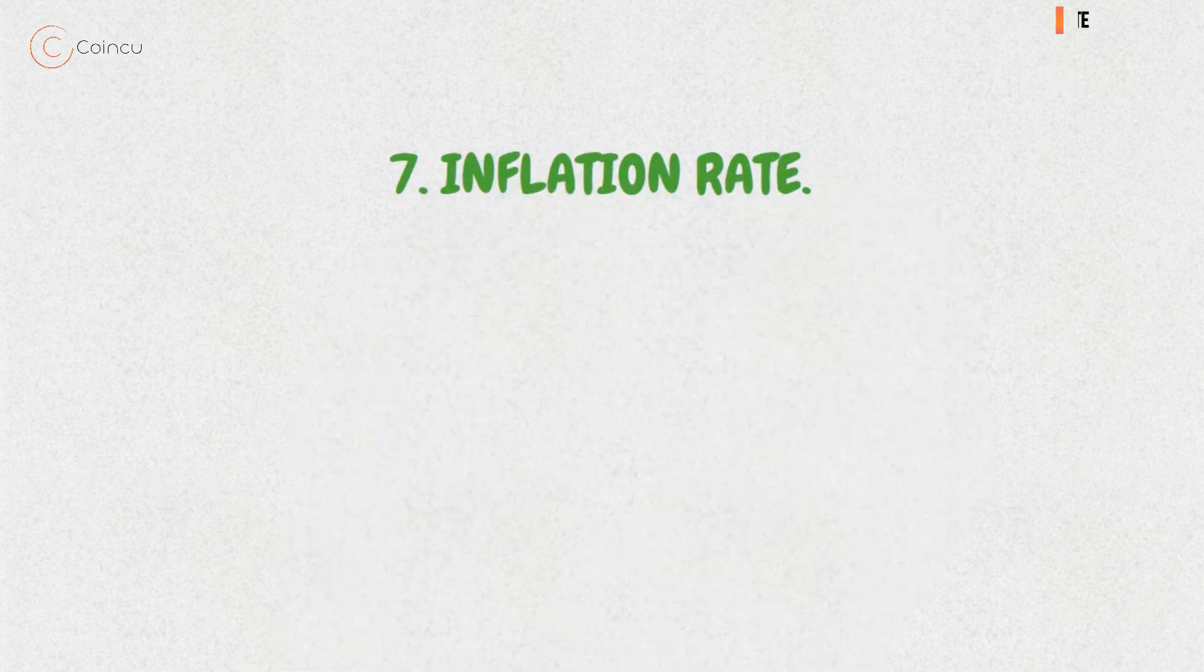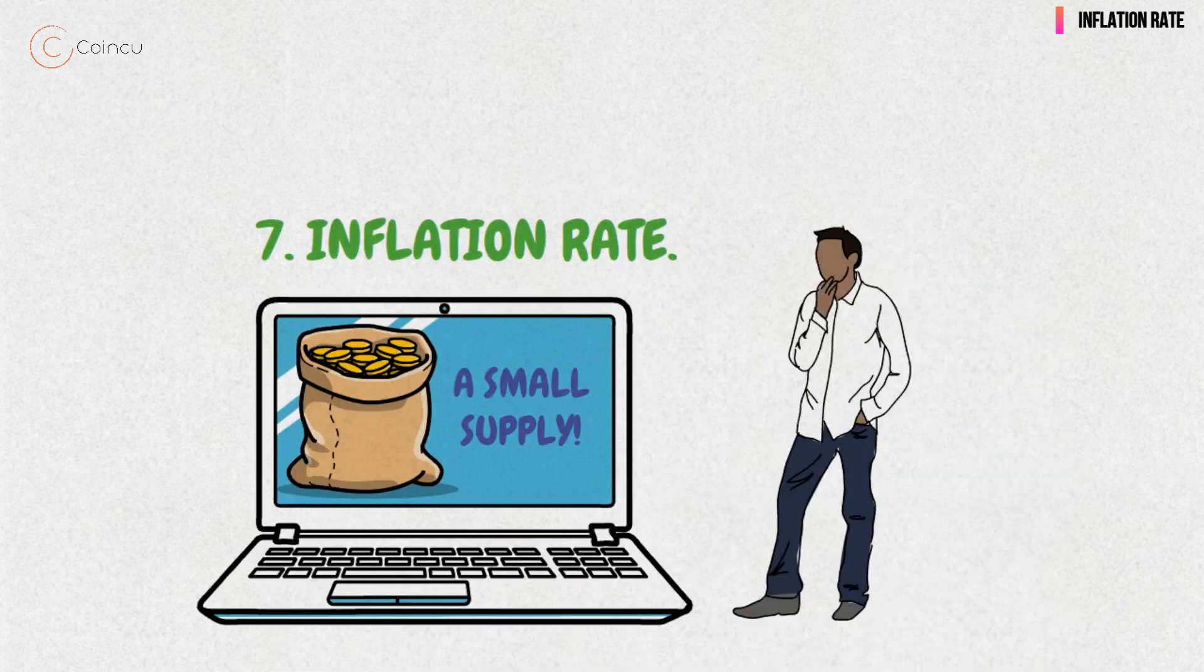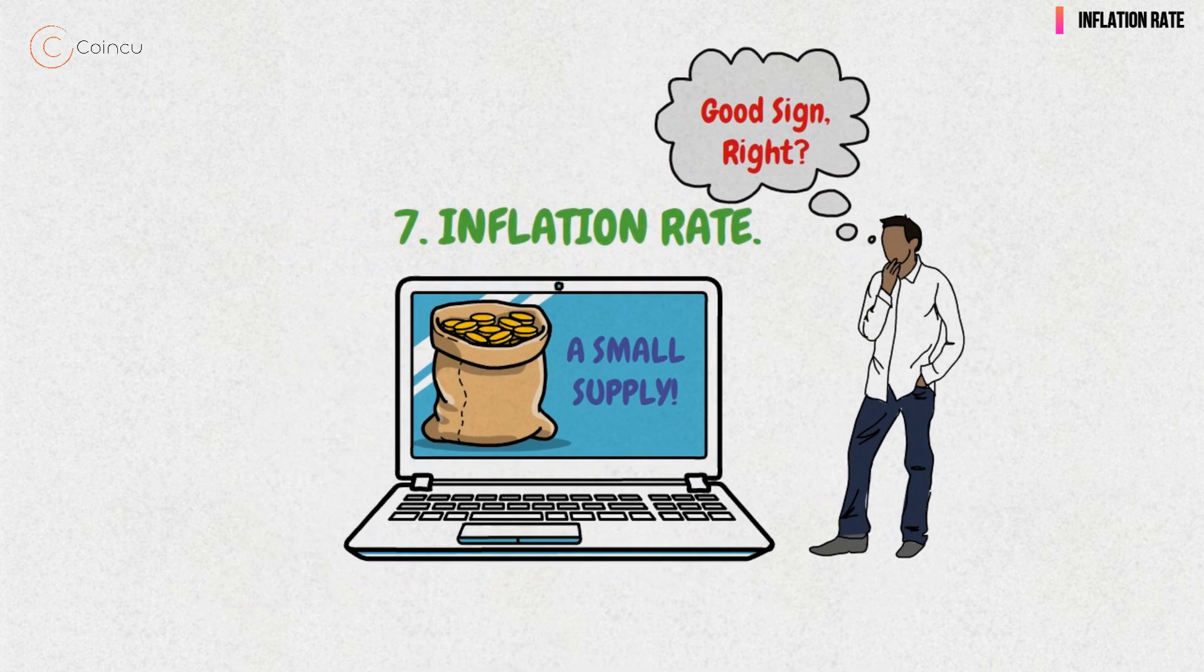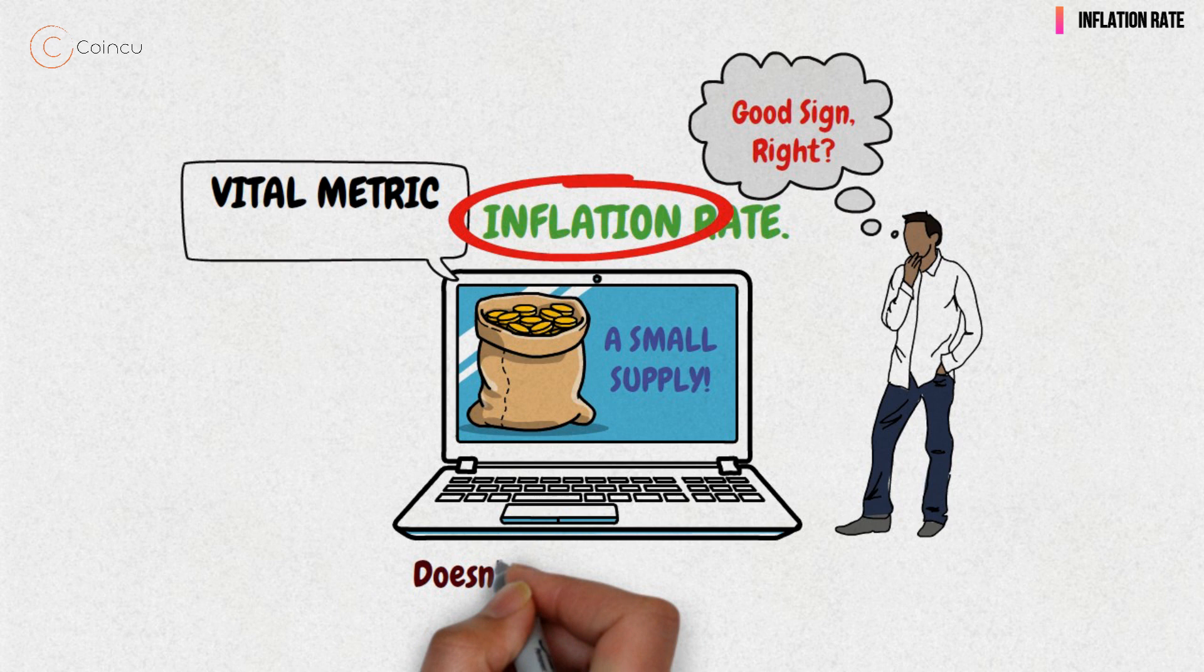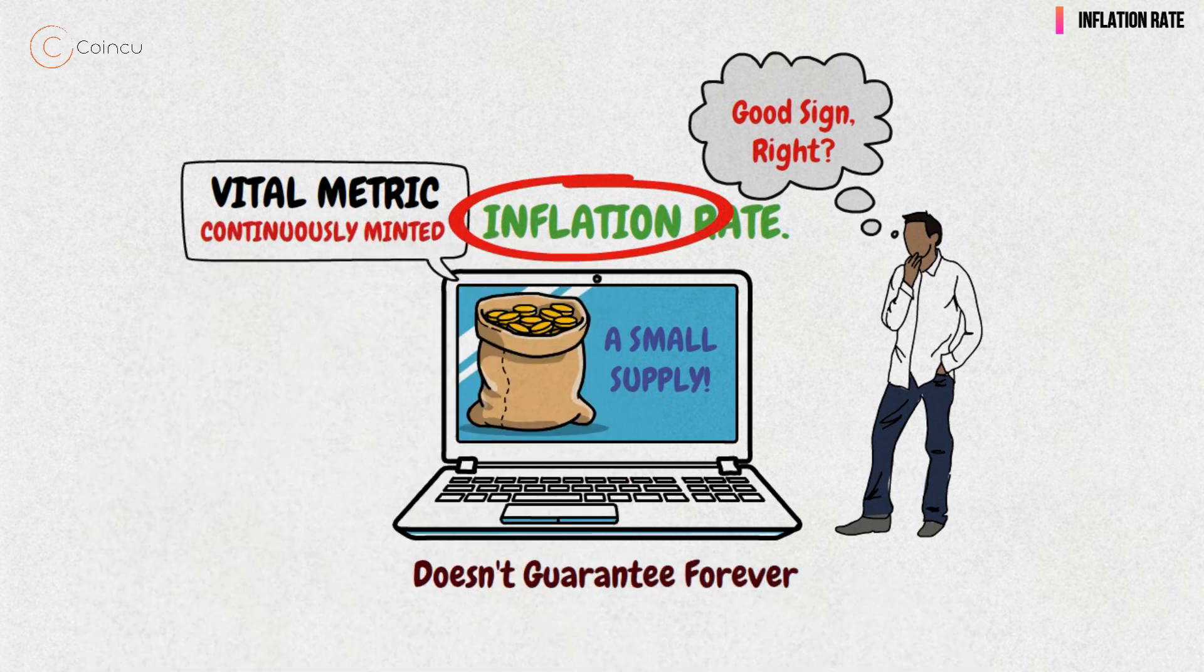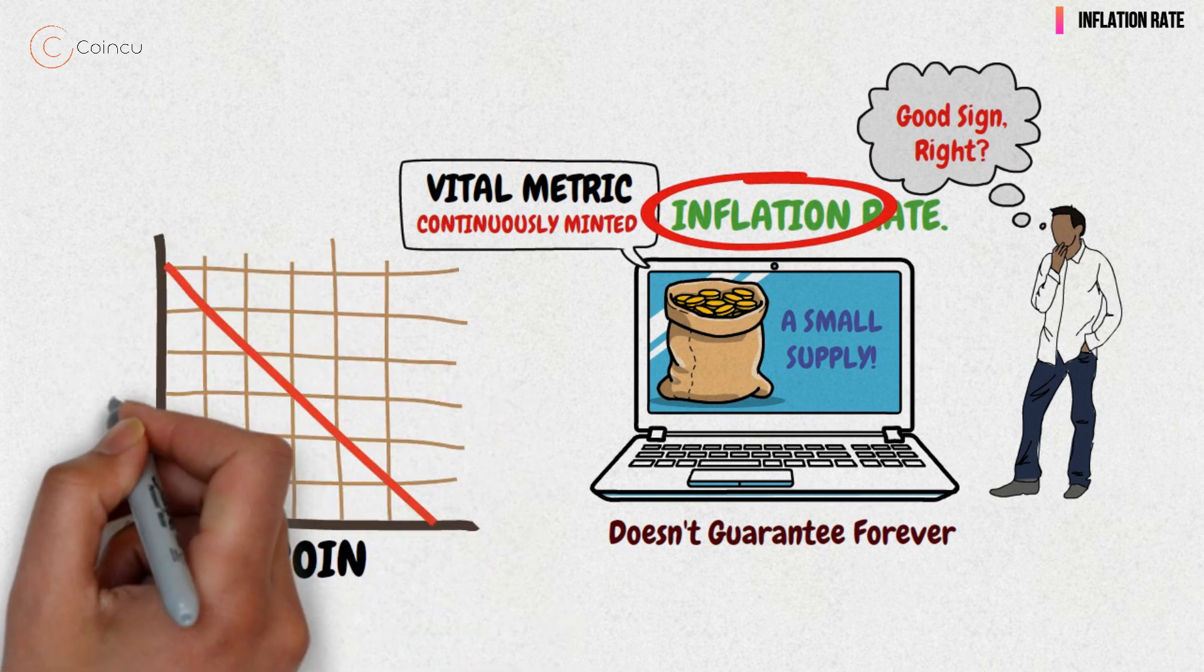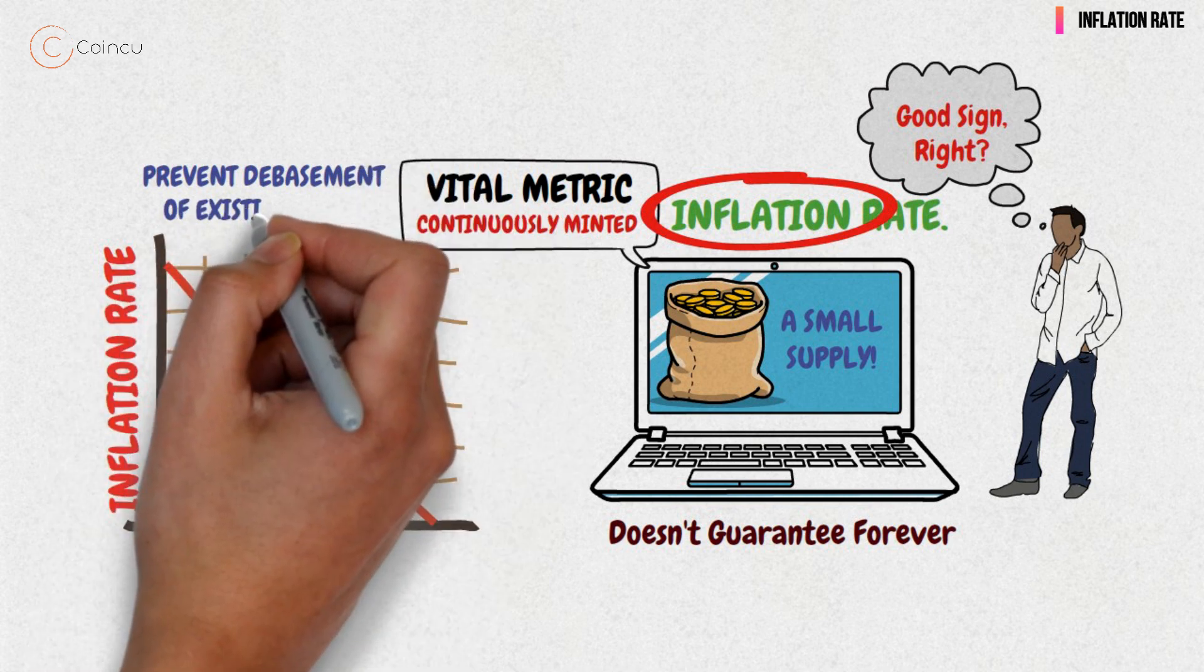7. Inflation Rate. Wow, a token with a small supply. That's a really good sign, right? Not necessarily. Another vital metric to keep an eye on is the inflation rate. A small supply now doesn't guarantee a small supply forever, particularly if new tokens are continuously minted. A notable property of Bitcoin is a constantly diminishing inflation rate, which should theoretically prevent the use of the current debasement of existing units in the future.